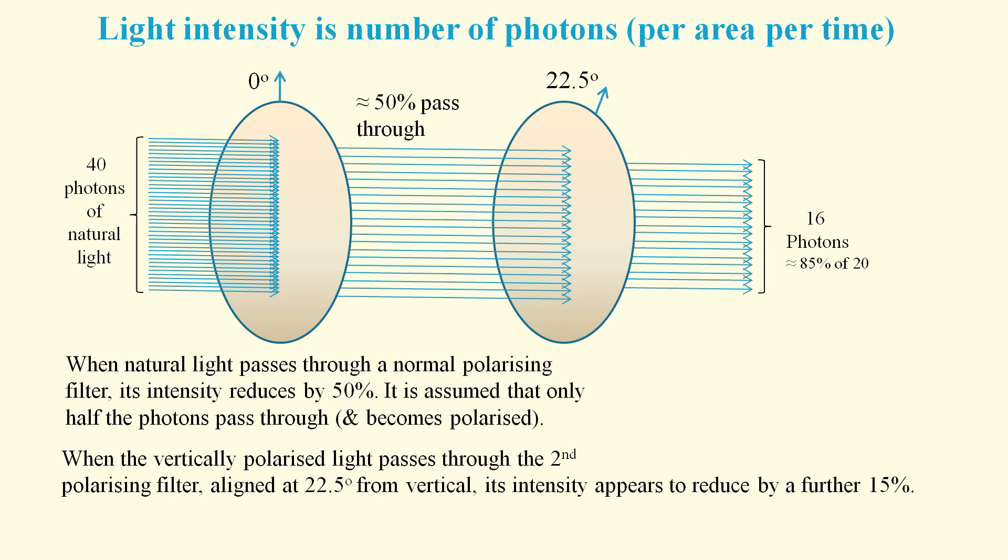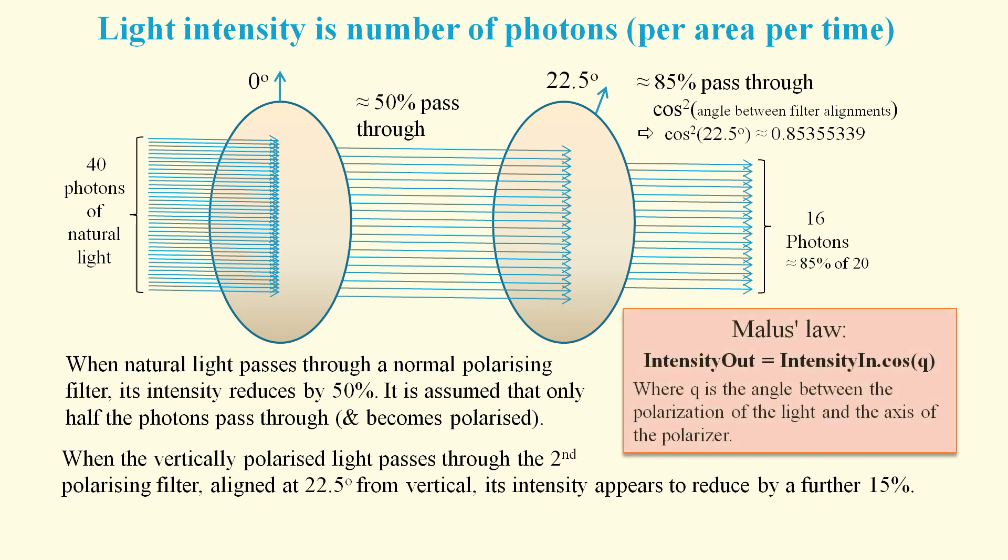From a quantum mechanics viewpoint, each photon travels as a wave of probability, and so the probability of it passing through both filters can be calculated as cosine squared of the angle between the two filters. But from a classical physics viewpoint, each photon of light has its own polarization. After passing through the first filter, all the photons become vertically polarized, and then at the second filter, the intensity out is calculated as the intensity in times the cosine of the angle between the polarization of the light and the axis of the polarizer.